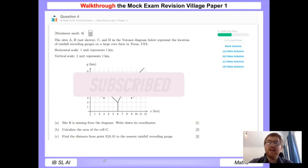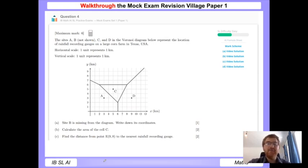Let's get started. We have a Voronoi diagram here. Sites A, B (not shown yet), C, and D in the Voronoi diagram show rainfall recording gauges on a large corn farm in Texas, USA. Gotta love that context for the applications course.